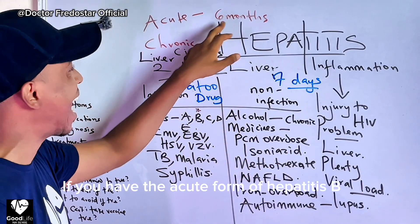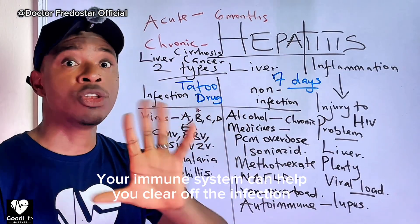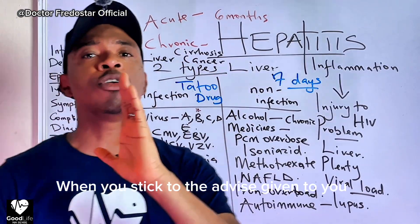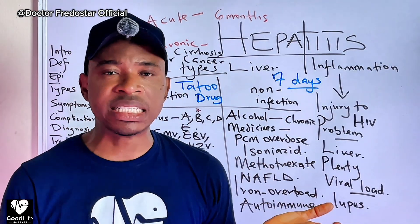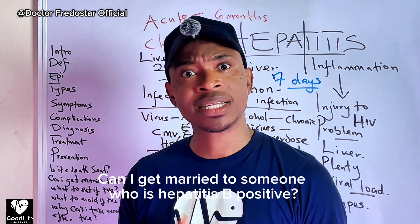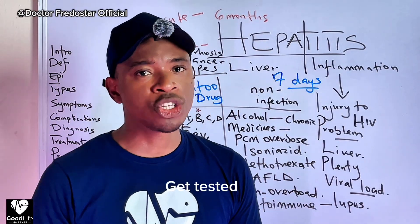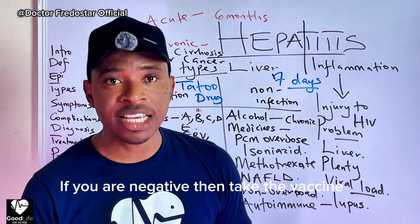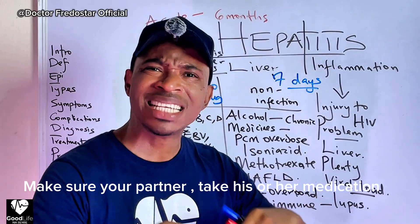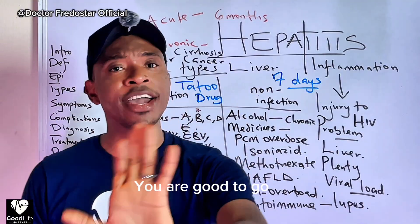If you get the acute form of hepatitis B — within six months, your body can actually clear it on its own. But when it goes chronic, there is no cure. However, if you follow all the advice and take your medicines, you can live fine. Can I get married to somebody who is hepatitis B positive? Yes! All you have to do is test yourself — if you are negative, take your vaccine. And make sure the person you are marrying is taking their medicine and has a low viral load.